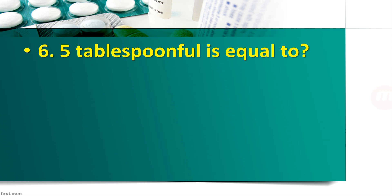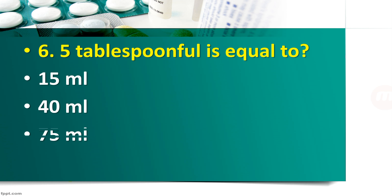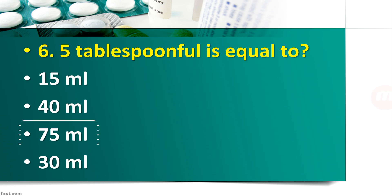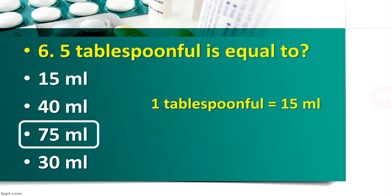Question number 6: 5 tablespoonful is equal to — 15 ml, 40 ml, 75 ml, or 30 ml? The right answer is 75 ml. 1 tablespoonful is equal to around 15 ml, so you have to multiply 15 into 5, and the right answer is 75 ml.